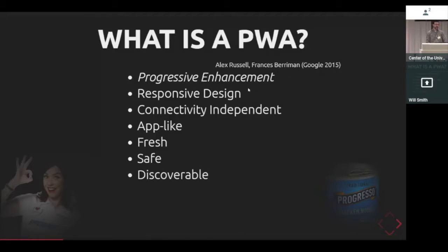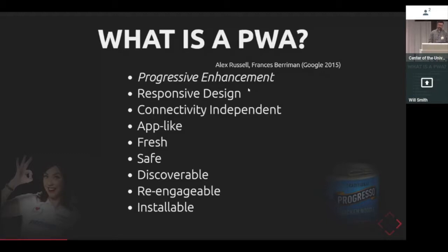Discoverable — part of the PWA spec is a manifest.json file with a description of your app that's crawlable by Google and other search engines. Engageable specifically refers to push notifications — you close the tab and then get a notification like 'you have new email.' Installable — instead of going to the app store, while you're browsing a progressive web app, the browser says 'do you want this on your home screen?' Click yes and it installs to your desktop. And linkable — you can just send people the URL; you don't have to describe where to find it on the app store.